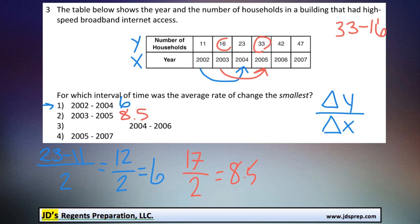Okay, let's take a look at the next one. So 2004 to 2006, from here to here, the number of households is increasing from 23 to 42. If we subtract those two numbers, we'll find out that the difference is 19. So we'll do 19 divided by 2, again, because it's a two-year difference. And 19 over 2 would get us 9.5.